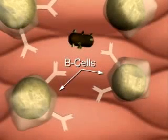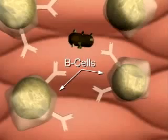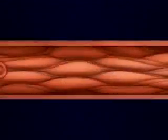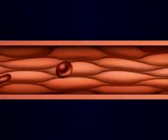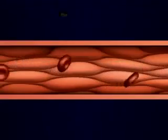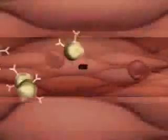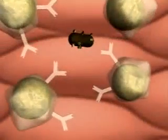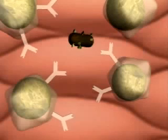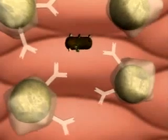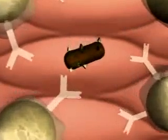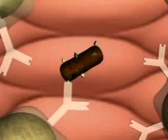B cells are one of the two types of white blood cells that make antibodies. When a bacterial cell enters the bloodstream, proteins on its surface act as antigens and trigger a response by the immune system. These antigens will bind to the unique B cells that have the corresponding antibodies on their surfaces.